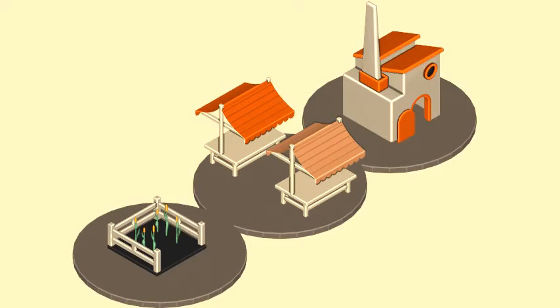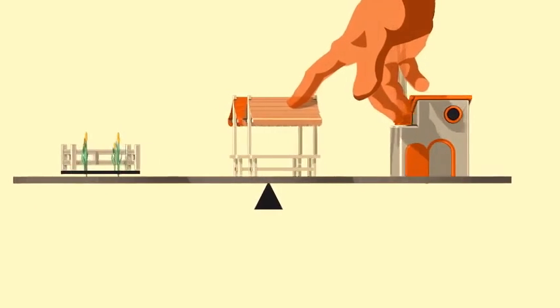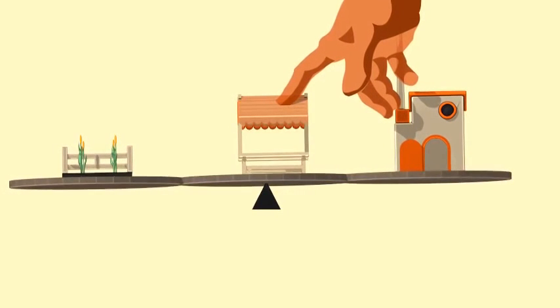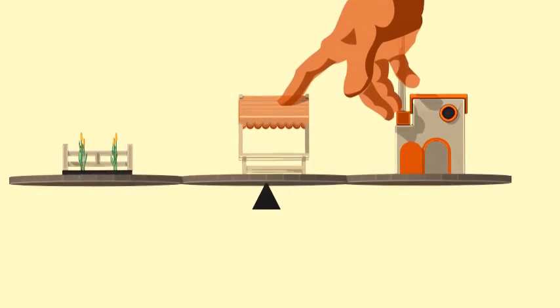In the 1950s, Arrow and Debreu supposedly saw the invisible hand, proving the existence of general equilibrium. This required further assumptions of increasing cost with scale, no externalities, and all goods being roughly substitutable.